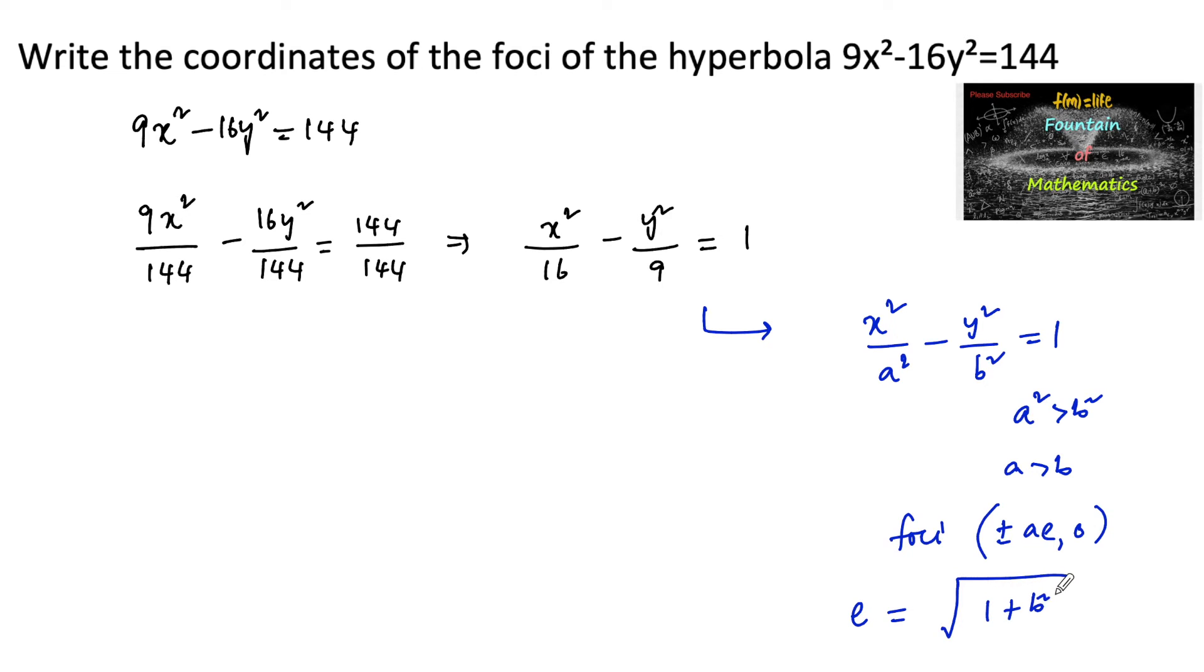Here, a² = 16 and b² = 9, so a = 4. The eccentricity e = √(1 + 9/16) = √(25/16) = 5/4. The eccentricity of the given hyperbola is 5/4, which is greater than 1 as expected.